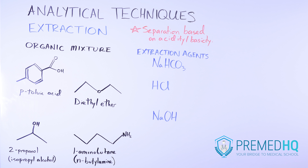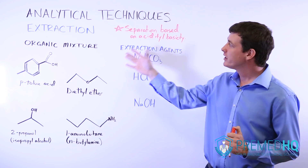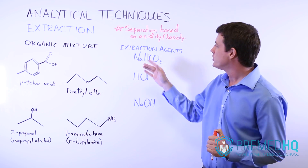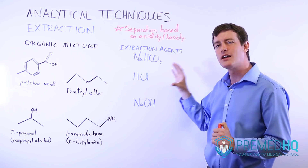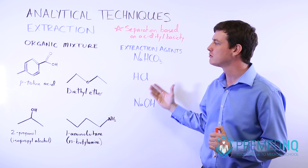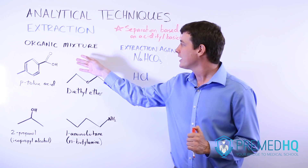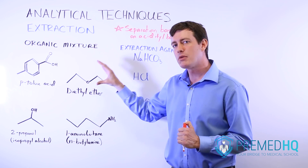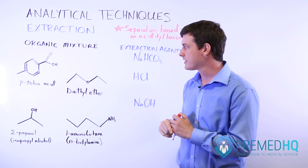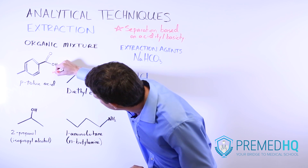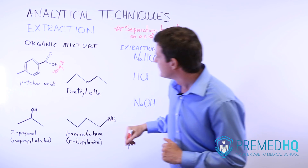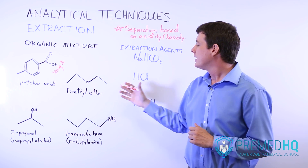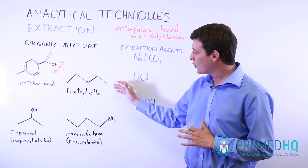Now we'll run through an example of an organic extraction. You have an organic mixture containing several components and a series of extraction agents. In our organic mixture we have p-toluic acid, which is a carboxylic acid — whenever you see a carboxylic acid, that will be the strong organic acid. So we'll call this the strong acid. Diethyl ether is usually seen as a solvent and in this case it won't be acting as an acid or as a base.